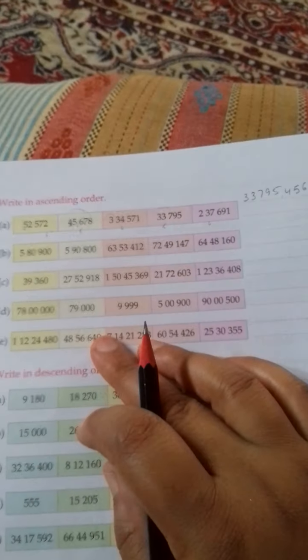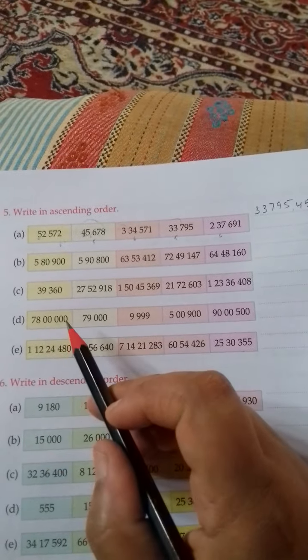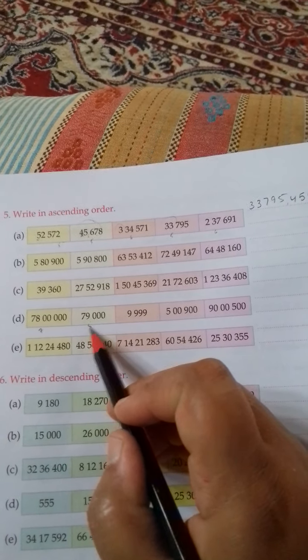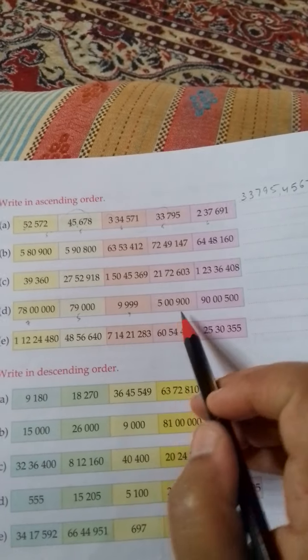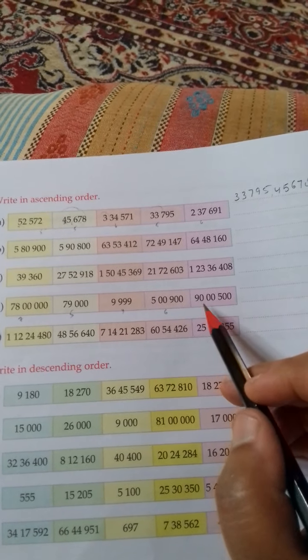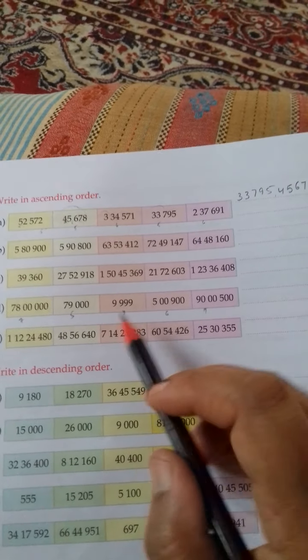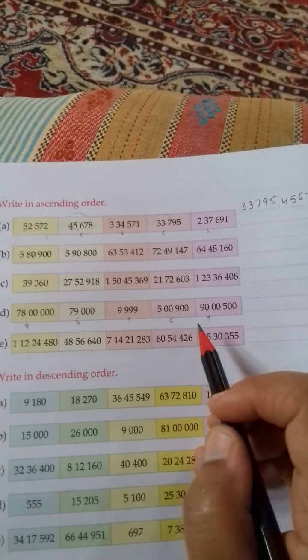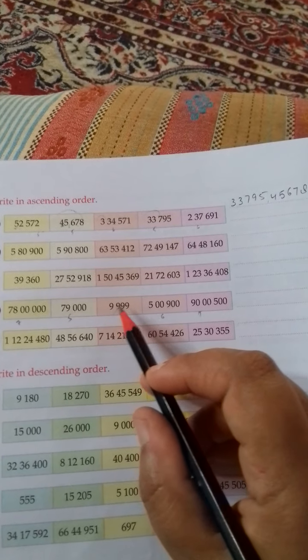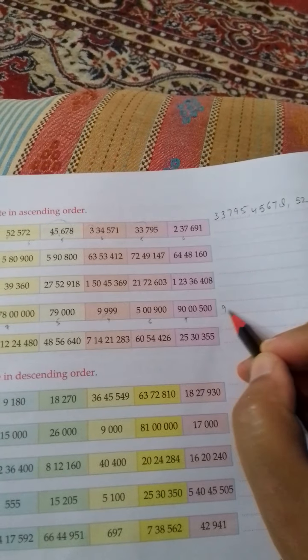Similarly let me do one more for you. This has 7 digits, then 5 digits, here 4 digits, here 6, and here 7, and 7. Now the number with smaller number of digits is this: 9, 9, 9, 9. So this is the smallest one.